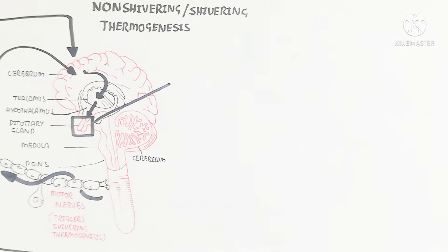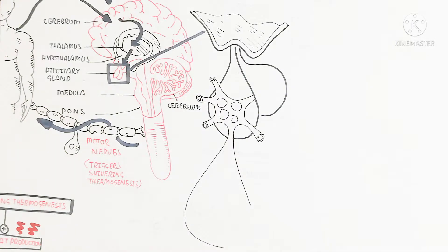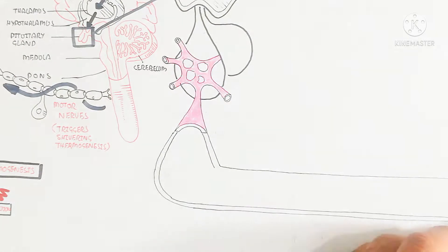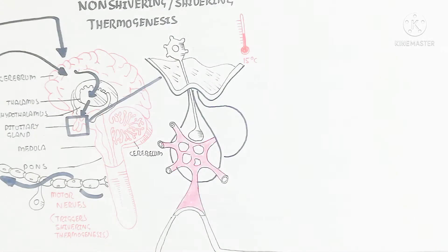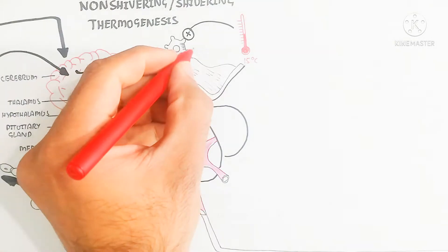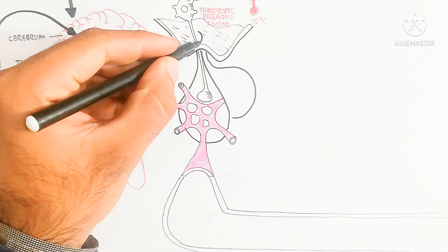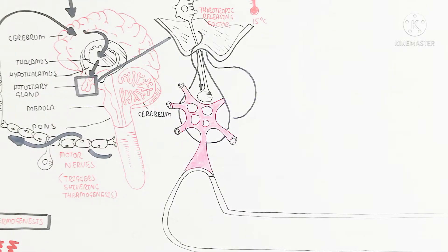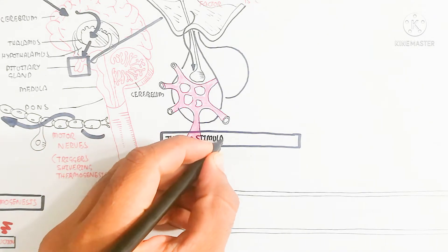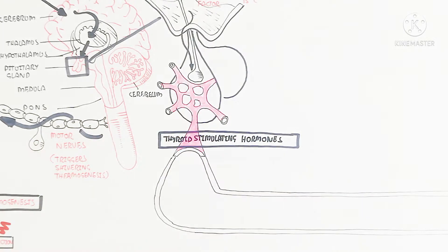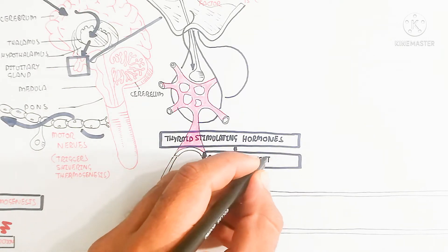While in the case of non-shivering thermogenesis, the hypothalamus is triggered. From the higher brain cortex to the thalamus, to the hypothalamus, to the pituitary gland, which releases hormones. The hypothalamus contains neurosecretory cells. During cold weather at 15 degree Celsius, the hypothalamus is triggered after detection from the cold receptor. The hypothalamus will produce the thyrotropic releasing factor, which stimulates the adenohypophysis — the anterior pituitary gland — to produce thyroid stimulating hormone and adrenocorticotropic hormone. These two hormones will trigger and produce heat without shivering in our body.